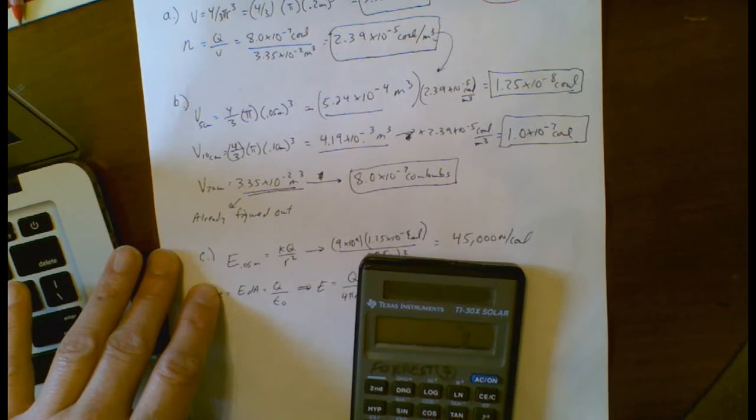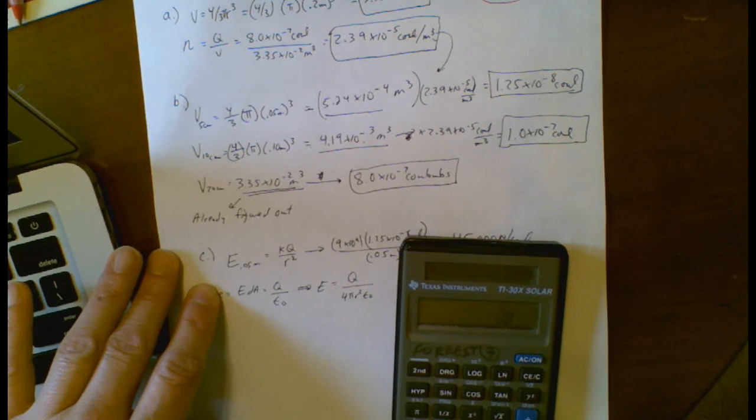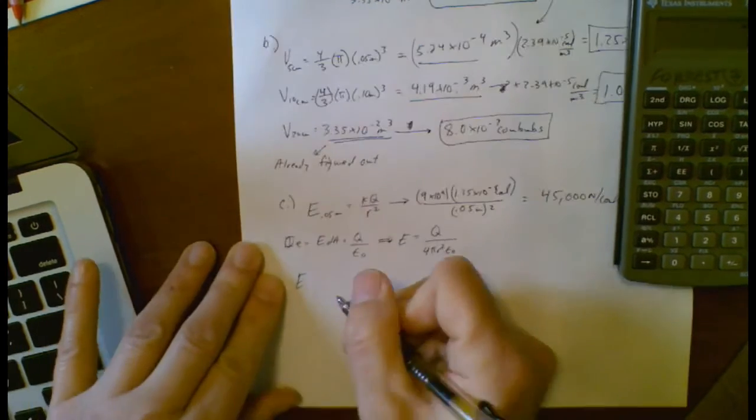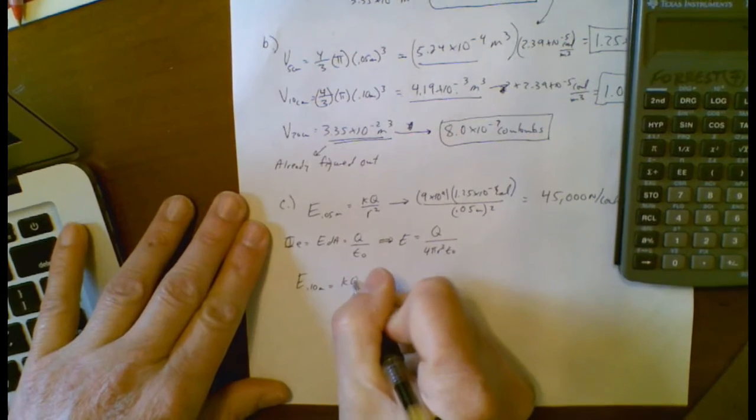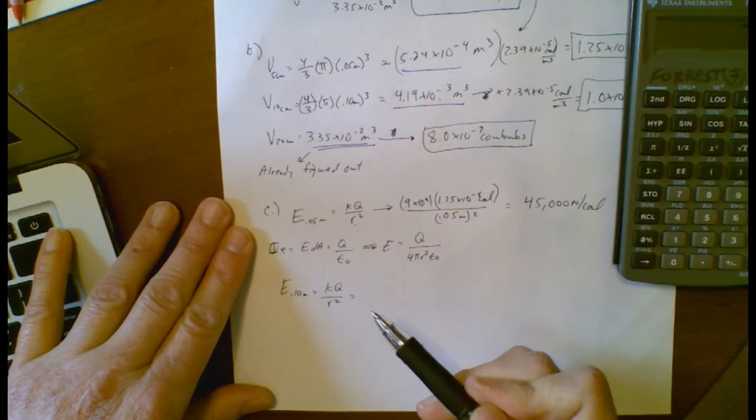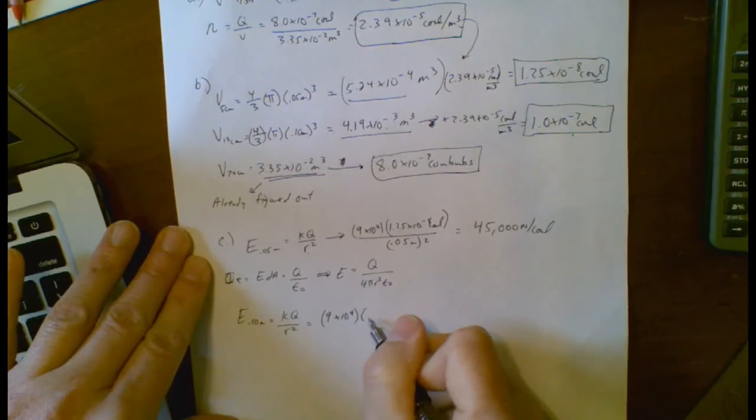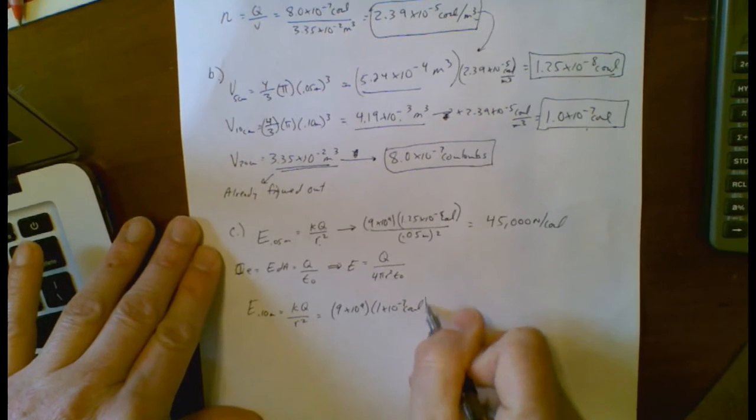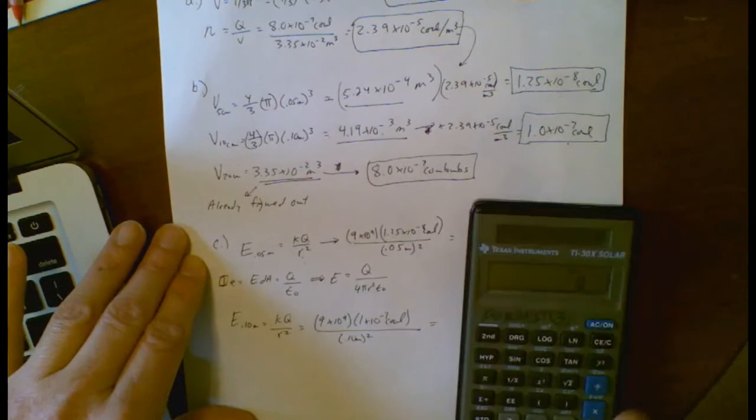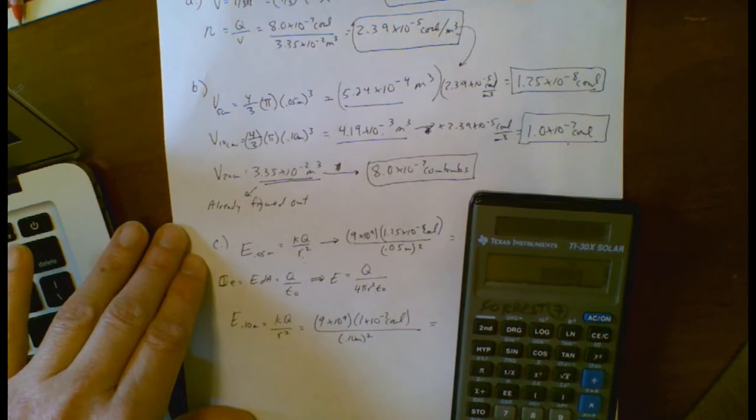I may want to check that again. Yep, that gives me the same number. So now here, for the 10 centimeter one, I'm going to use this method again. So the charge is going up by a factor of 8. The radius is only going up by a factor of 4. Here's the amount of charge I've got, which is 8 times as much. That's 0.10 meters squared. So I'm anticipating this is going to double the field strength. 90,000.